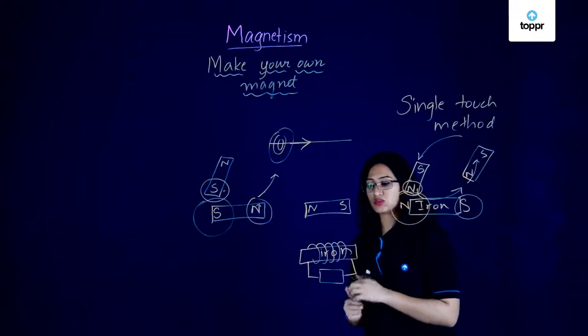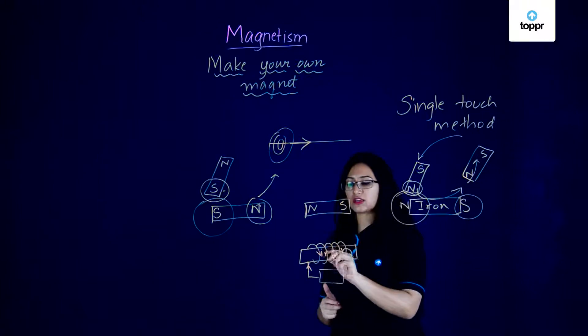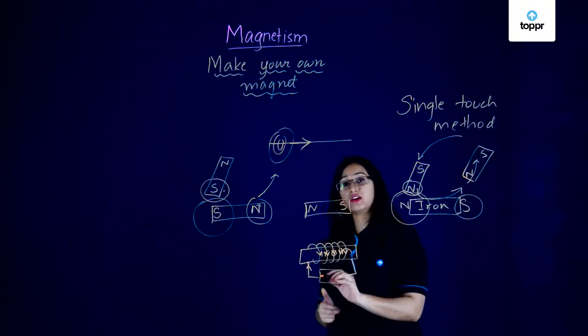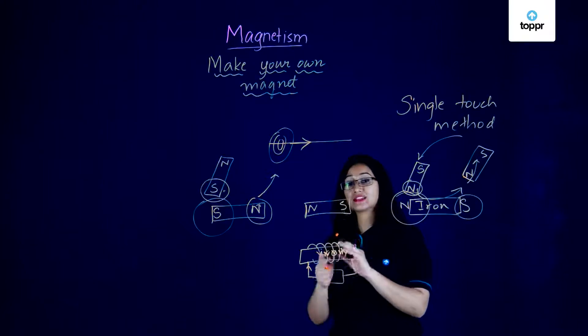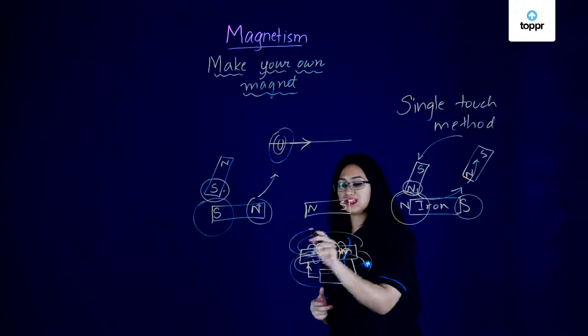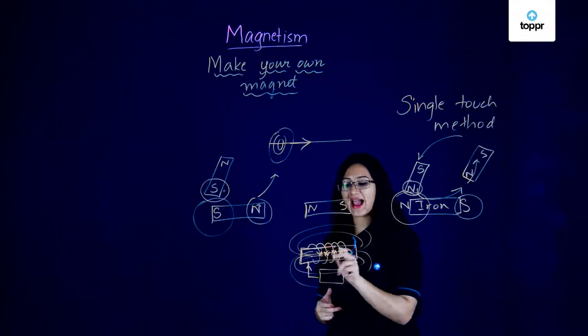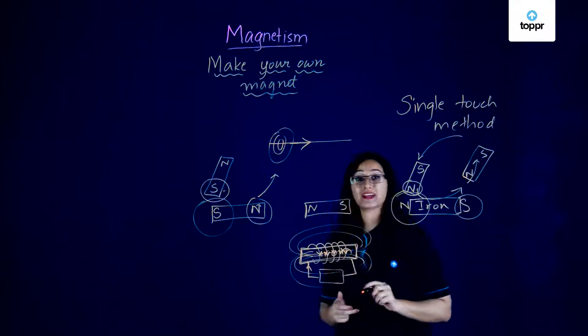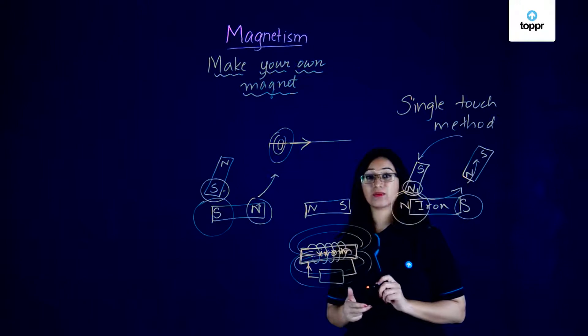So the battery or the power source is going to pass a current through the wire and because this current or this electricity has its own magnetic field, the magnetic field will transfer to your iron substance or your iron object and it will create a magnet or the iron will become magnetized and it will become a magnet.